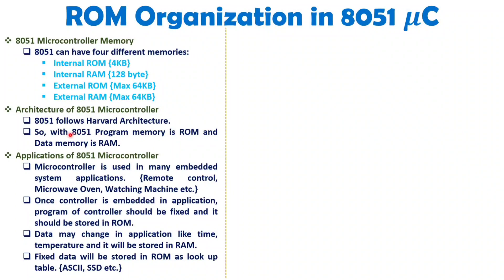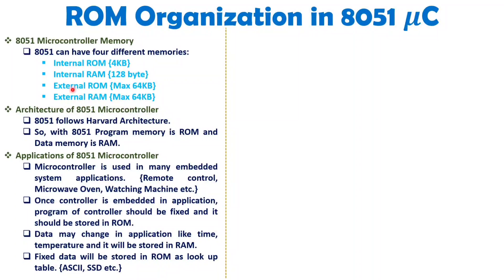In short, 8051 is based on Harvard architecture — it has both RAM and ROM. ROM is used for the program and RAM is used for data. Internal RAM has a size of 128 bytes and internal ROM has a size of 4 KB. If a programmer has a high-end application, they can interface external memory, and at maximum we can interface 64 KB of ROM and 64 KB of RAM.